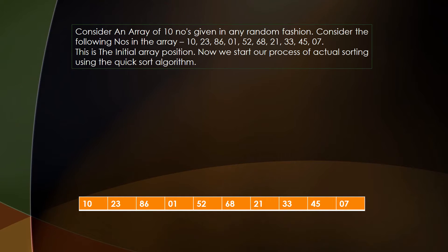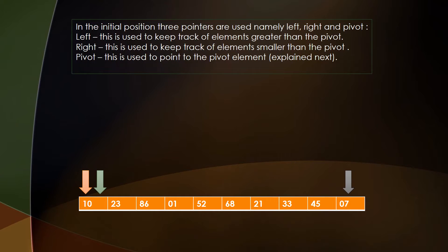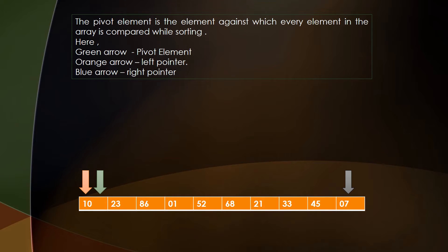We have taken an example array containing 10 numbers — this is the initial array position. In the quicksort algorithm we use three pointers: the left pointer, the right pointer, and the pivot pointer. The left pointer keeps track of elements greater than the pivot, the right pointer keeps track of elements smaller than the pivot, and the pivot pointer points to the pivot element itself. The pivot element is the element against which every element in the array is compared while sorting. The green arrow represents the pivot, orange represents the left pointer, and blue represents the right pointer.